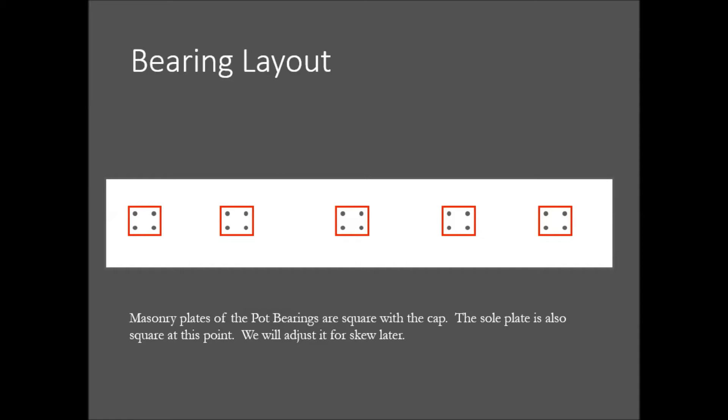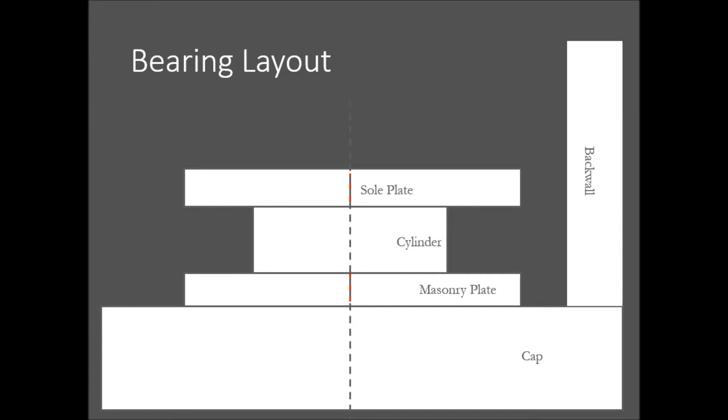When we make our adjustments, both the masonry plate and the sole plate will be square with the cap. If there is a skew, we will adjust for that later. To begin, the center line of bearing should have been marked on the cap. The center of each side of the masonry plate and the sole plate should also be marked. The bearing should be set on the cap with the center of the masonry plate lined up with the center line of bearing marks.